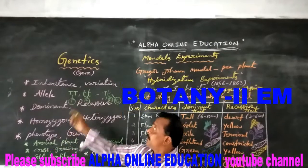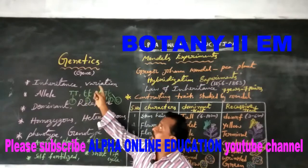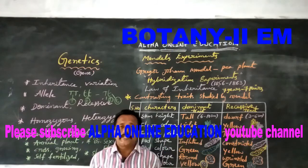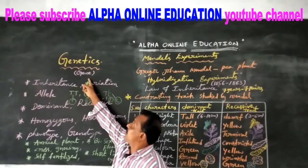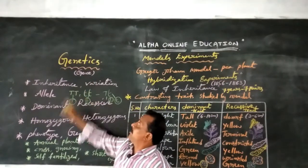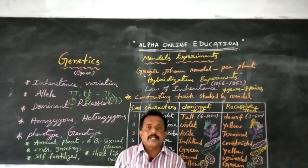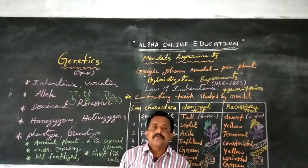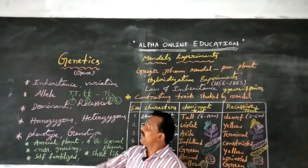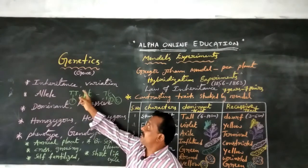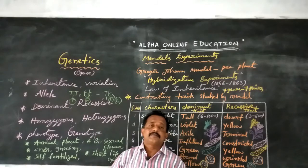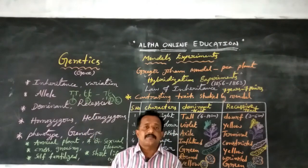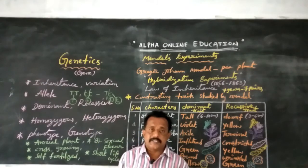Today, we are going to discuss about genetics. First, what is the meaning of genetics? The study of genes is called genetics. Another definition: the study of validity with all aspects related to genes, such as their structure, function, and classification of inheritance and variations. That is called genetics.